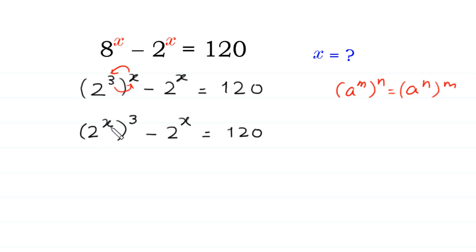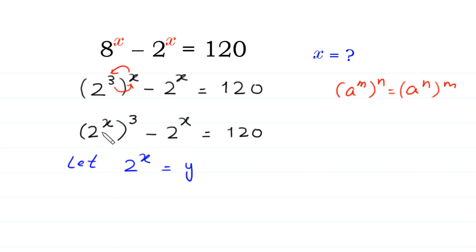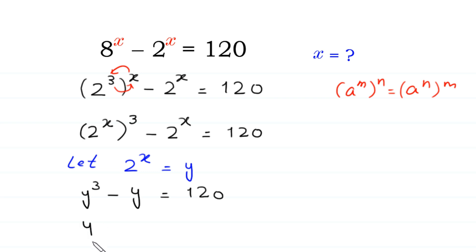Here we have 2 to the power x in both terms. So we suppose that 2 to the power x is equal to y. We substitute y into the equation, and it becomes y cubed minus y is equal to 120.